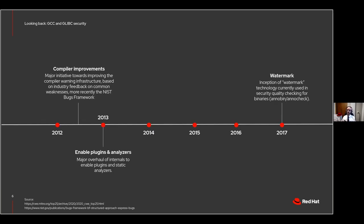What was the compiler doing at this time? Around 2012 and 2013, we began significant compiler improvements in warnings infrastructure and static analysis infrastructure, based on common industry feedback. We began developing the framework in GCC for future static analyzers and for the warnings frameworks to produce better warnings. Those better warnings, coupled with W-error and compiling the core runtimes with W-error, began to produce an iterative cycle that improves the quality of the development process and the runtimes.